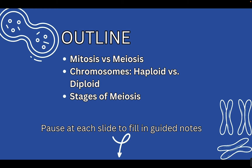The outline for today's notes starts with mitosis versus meiosis. It is important that before you start these notes, you have an understanding of mitosis. There is a lot of vocabulary and processes that I'm not going to review in meiosis because they are outlined in the mitosis notes. The next part will be an overview of the chromosomes, what haploid versus diploid means, and then I will go through the various stages of meiosis. You can pause at each slide and fill in the guided notes found in the description below, or you can watch the video straight through.